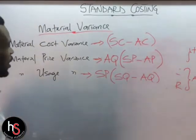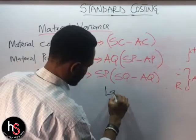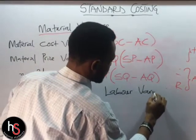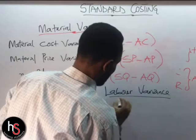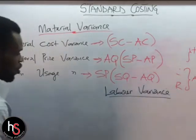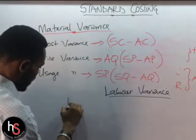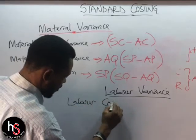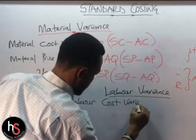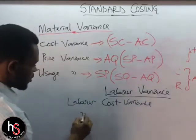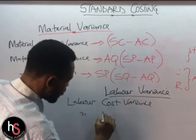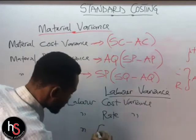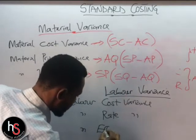Now talking about the labor variances. The labor variances are also three in number: the labor cost variance, the labor rate variance, and the labor efficiency variance.